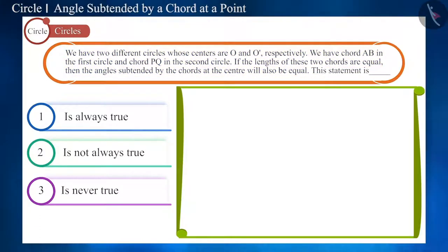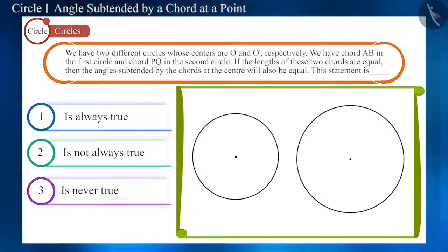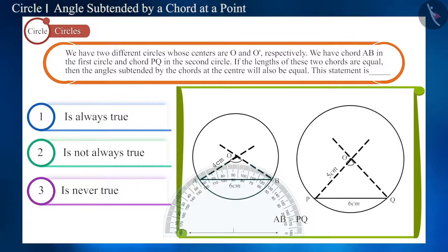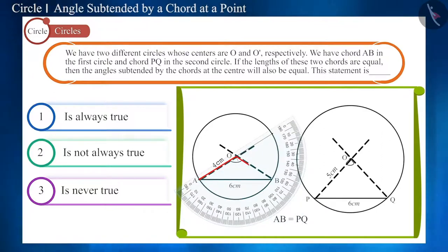Let us suppose these are two circles whose centers are O and O' respectively and whose radii are 4 cm and 5 cm respectively. Now, we will draw chords of length 6 cm in both circles. Name the chords AB and PQ respectively. Make angles subtended at the center by these chords and find their measurement with the help of a protractor.